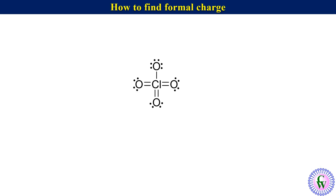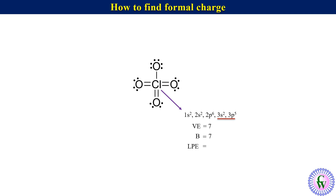The next example is ClO₄⁻. It has a central chlorine atom and 4 oxygen atoms. First, determine the formal charge on the chlorine atom. Its electronic configuration is 1s², 2s², 2p⁶, 3s², 3p⁵, showing 7 electrons in the valence shell, so Ve = 7. There are 7 covalent bonds around it, so B = 7. There is no lone pair, so Lpe = 0. Thus Fc = 7 − 7 − 0 = 0.